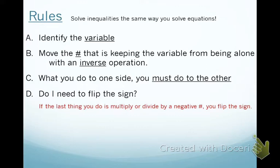The difference is there's going to be symbols that look like this. What does that symbol say? Less than. What does this one say? Greater than. If I were to add a little line underneath it, what does that now say? Less than or equal to. What does this one say? Greater than or equal to.